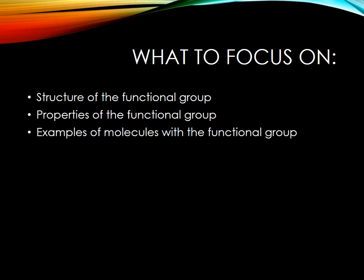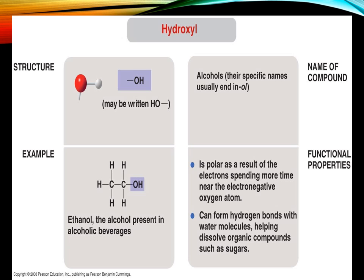As we go through the functional groups, you need to know the structure, the properties, and examples of molecules. Our first group is hydroxyl. What you're looking for is an OH — it can also be written as HO. They're called an alcohol. They're polar and very good at forming hydrogen bonds, and they can help dissolve molecules. This is useful because if you've got to take things apart and put them back together, you want that ability to break a hydrogen bond.